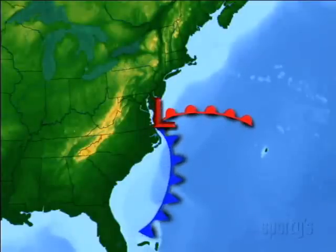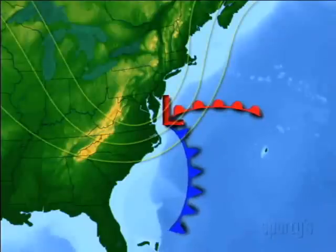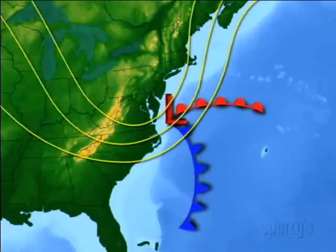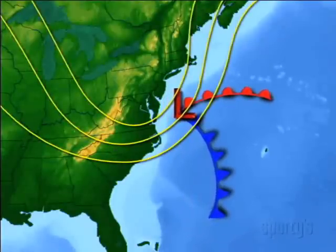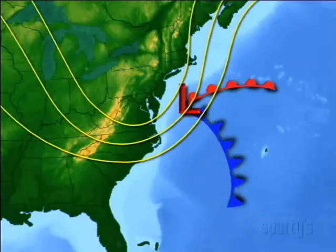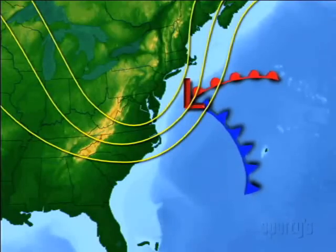We can tell pretty well how a low might track. They tend to follow the wind at the 500 millibar level — that's approximately 18,000 feet. If you know the wind up there, you know how the low will track. Just visualizing the counterclockwise flow around the low can give you an idea of the amount of moisture it can collect.